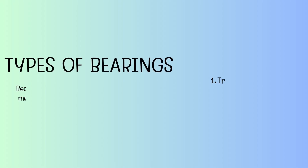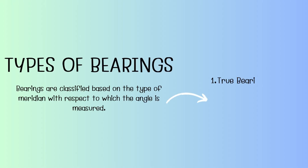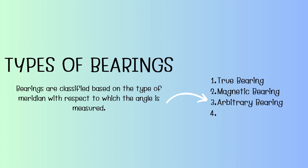Bearings, as mentioned before, is a system of designating the direction of lines. The bearings of lines can be measured with respect to any type of meridian. So based on this, we have true bearing, magnetic bearing, grid bearing, and arbitrary bearing.